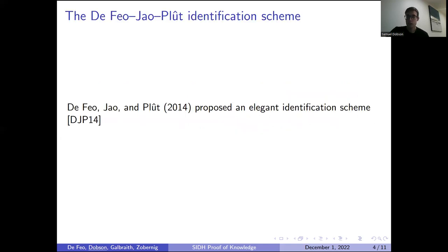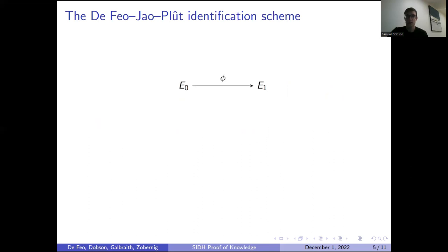The original SIDH paper actually included an elegant identification scheme. We've got our secret isogeny phi, we pick an ephemeral side to a different elliptic curve E2, and then we complete what's called an SIDH square, where we're essentially doing a key exchange with ourself. Both these paths commute and arrive at the same elliptic curve E3. We commit to E2 and E3 and then receive a single bit challenge.